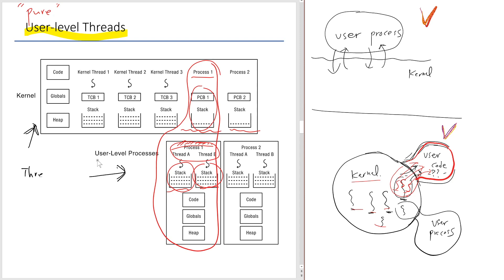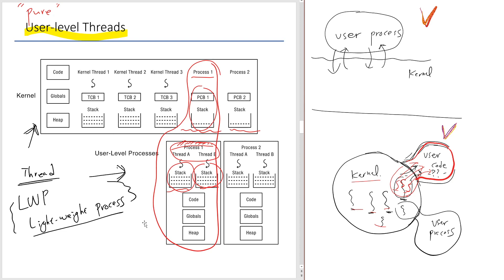Another name for thread was lightweight process, LWP. Basically, it's a process but lightweight. Switching to a different process requires switching the entire address space, which is costly compared to just switching the stack and thread context — not the entire address space. That was another motivation for threads. The acronym LWP can still be found in some thread packages that have history going back to the 80s and 90s.